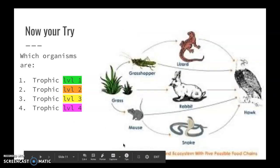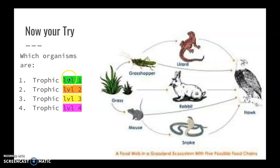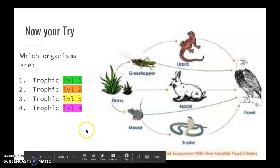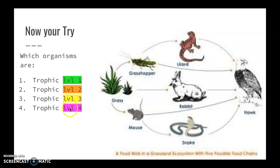Now it's your turn with this food web. The picture is a little blurry, but following our rules: which organisms are trophic level 1 — those are your producers, your plants. After you identify trophic level 1, which organisms are trophic level 2? Trophic level 2 organisms only get energy by consuming level 1. Which organisms are trophic level 3? These organisms get energy by consuming organisms in trophic level 2 or lower, but they must consume trophic level 2 to be trophic level 3. And which organisms are in trophic level 4?